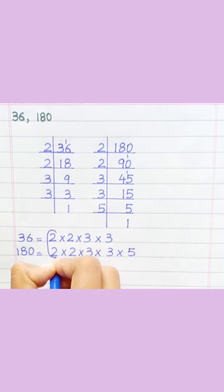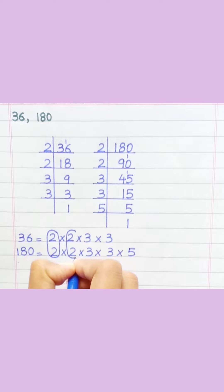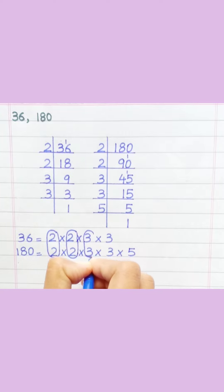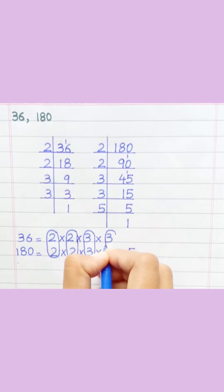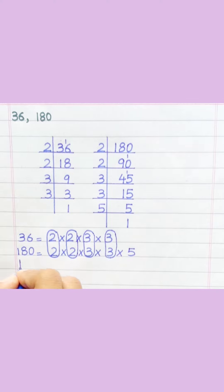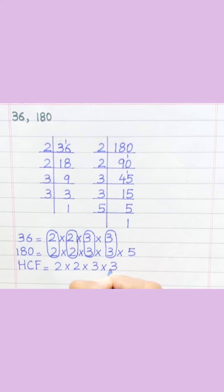Loop the common prime factors among both. HCF equals two multiply two multiply three multiply three, equal thirty-six.